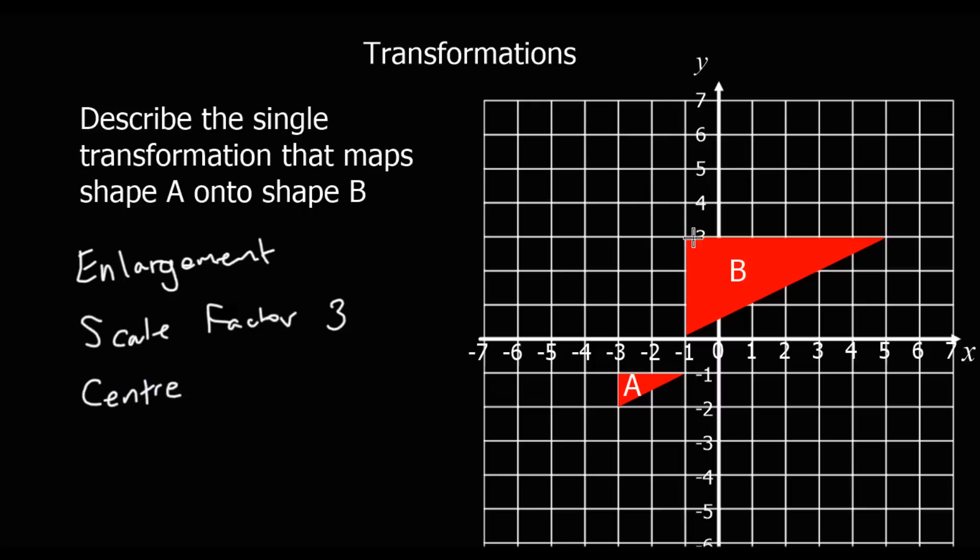To do that we can join up the points. So that point is with that one. This one goes with that point. And this point joins up with that one. So we can see, maybe the lines are slightly off, but the centre appears to be here. So it appears to be (-4, -3).